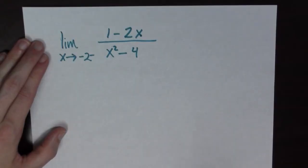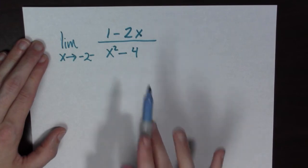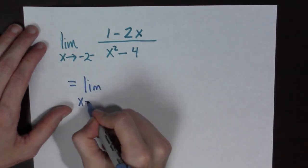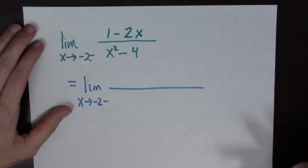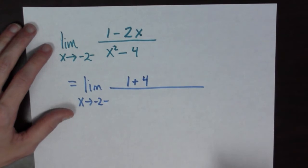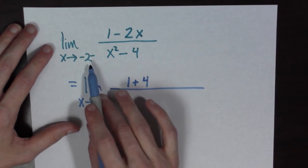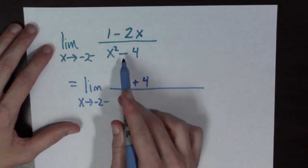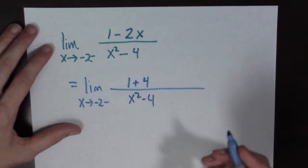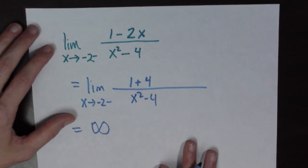Next example! Here we have x goes to negative two from the left of one minus two x over x squared minus four. We can evaluate the numerator first: plugging in negative two gives one plus four. In the denominator, going to negative two from the left means plugging in values like negative two point one. Because it's being squared, the denominator is positive but getting smaller and smaller. So this is a positive number over a small positive number, and the limit goes to infinity. Done!